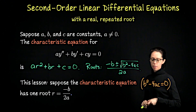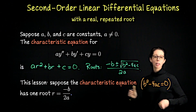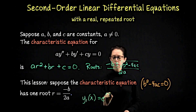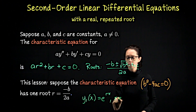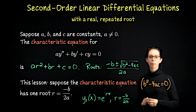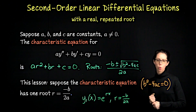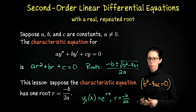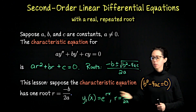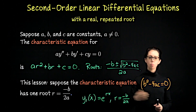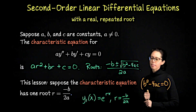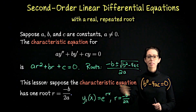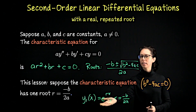When we have a repeated root, that root still produces a solution we can immediately write down. One solution is Y1 = e^(Rx), where R = −B/2A. However, this is a second-order equation, so we also need to find another solution Y2 that is linearly independent — meaning it doesn't look like Y1 or a constant multiple of it. Since there's no other value of R, the second solution can't be exactly of this form.